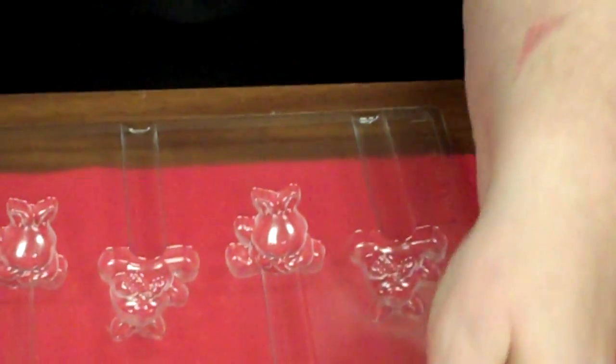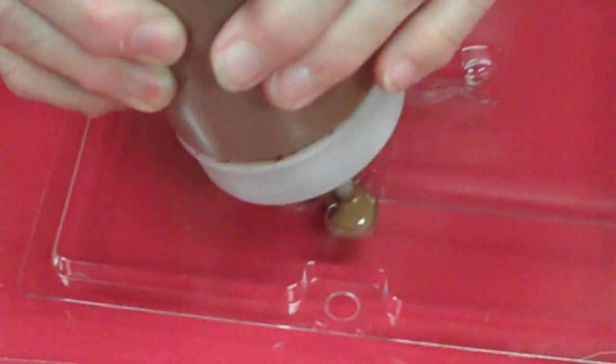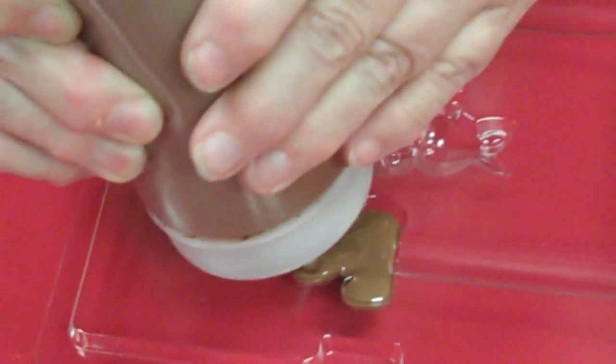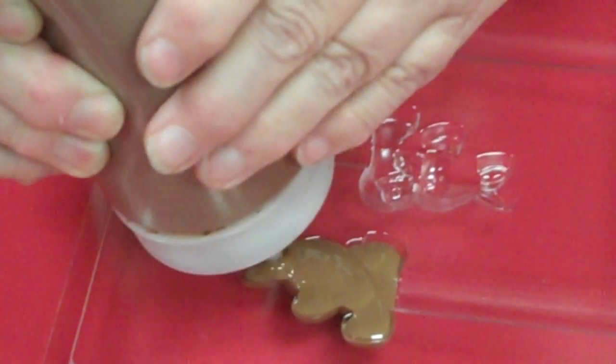We're going to be doing this little bunny here in just chocolate, and it really works out very nicely. It's very simple. I have my chocolate melted here in the squeeze bottle. I'm just going to take that squeeze bottle filled with the melted chocolate and squeeze it into the mold.